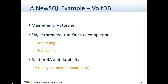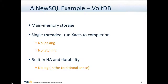VaultDB is an example of a new SQL system. It's a main memory database system. It is single threaded. It runs transactions to completion in timestamp order. There is no locking, there is no latching. There is built-in high availability, so there is no log in the traditional Aries-style write-ahead log world. There is durability, so if the power goes out and you lose an entire cluster, it does very lightweight and cheap command-level logging. Vault gets rid of the overwhelming majority of all four of these big sources of overhead.